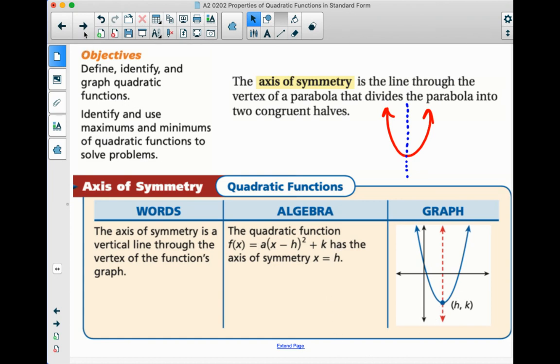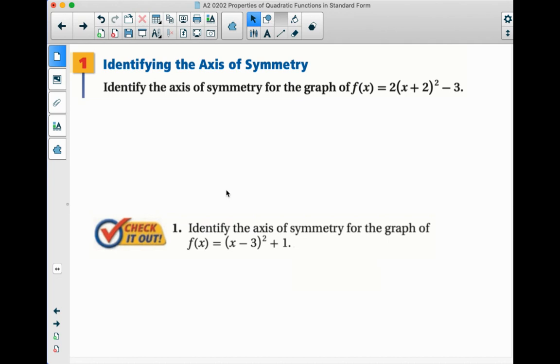So let's try some out. Identify the axis of symmetry for the graph of f of x equals 2 times x plus 2 squared minus 3. We know all the transitions, all the transformations of this.